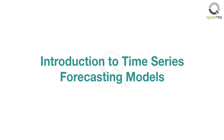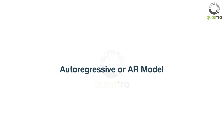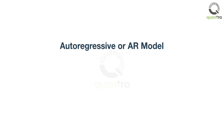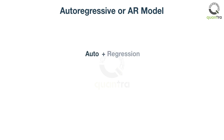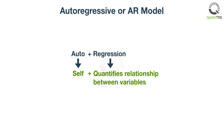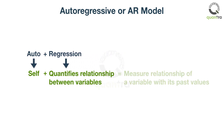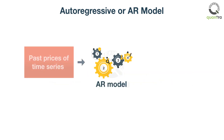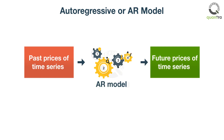Welcome to this introductory video on time series forecasting models. The first model you will learn is the autoregressive model, or AR model. Autoregression consists of two parts: auto and regression. Auto means self and regression quantifies the relationship between variables. Thus, autoregression in time series means measuring the relationship of a variable with its past values. Autoregressive models use past values of a time series to predict its future values.